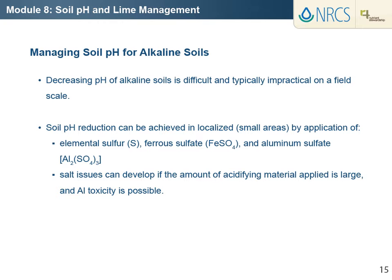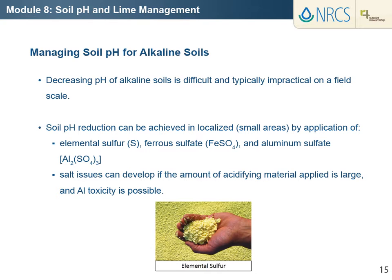Instead, crop, nutrient sources, and production practice decisions are all based on knowledge of field conditions. Soil pH reduction can be achieved in localized or small areas, for example, garden or landscape areas for plants that require low pH. In such cases, a common amendment to acidify soil is elemental sulfur. Elemental sulfur is oxidized by microbes to sulfate with production of hydrogen ions, which then neutralize free lime or lower base saturation on the exchange complex.